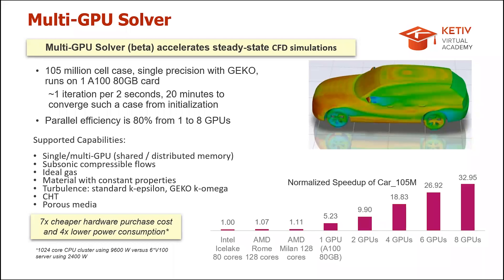One important note is that this is not applicable to all types of CFD simulation, because the CFD physics depends on the solver you're using. For now, the only supported capabilities include subsonic compressible flows and ideal gas simulations, mainly for heat transfer or aero applications. It does have some limitations for more complex cases such as combustion or reacting flows. So if you're doing basic conjugate heat transfer or external aero, do try out the multi-GPU solver and see what sort of scaling you can get instead of using CPUs.